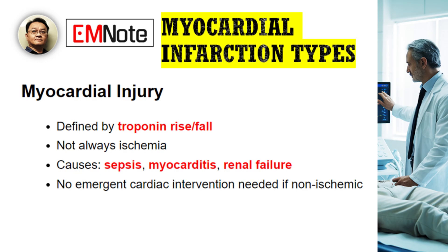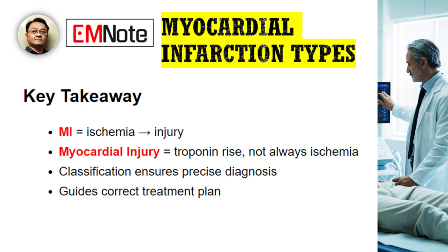Now let's distinguish all of this from myocardial injury. This is a crucial concept. Myocardial injury is defined simply by a rise or fall in cardiac troponin, but it does not meet the criteria for myocardial infarction. The elevated troponin isn't necessarily due to ischemia. Conditions like sepsis, myocarditis, or renal failure can all cause myocardial injury without a coronary event. Myocardial infarction is myocardial injury caused by ischemia; myocardial injury is just elevated troponin, and it could be from a variety of causes, not all of them ischemic.